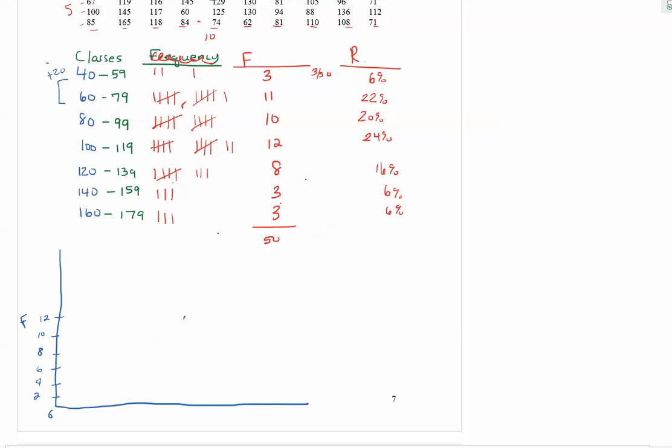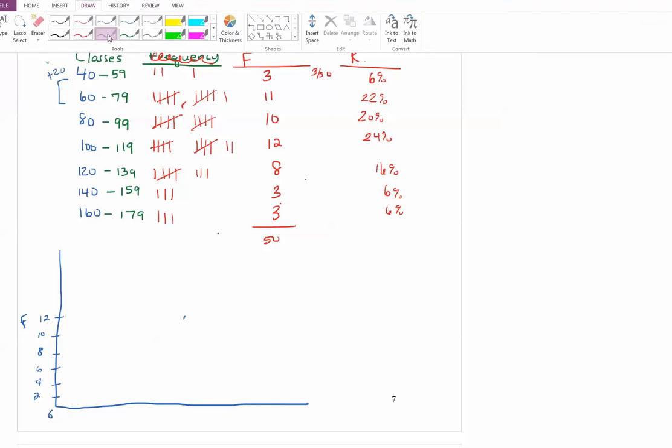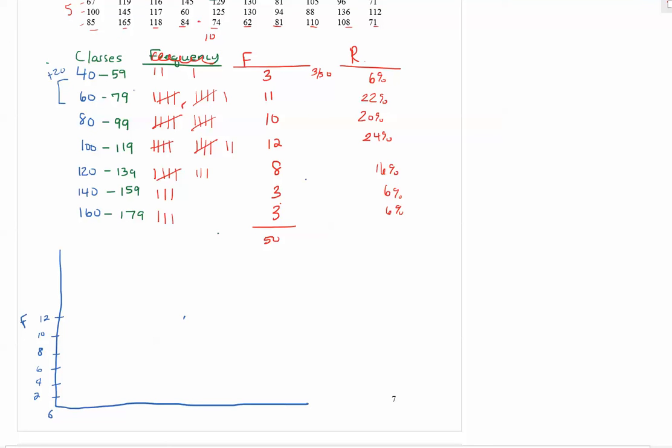The x-axis is going to be the bars of your classes 40 to 59, 60 to 79. And there's a lot of ways to do this. Sometimes you'll see the bars just labeled like 40 to 59. Other times you'll see the edges of the bars are boundaries of the class, or they might just put the midpoint in the middle of the bar. So I'm going to go ahead and just label the bars with the classes 40 to 59.